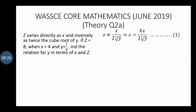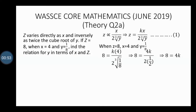From the question, when z equals 8, x equals 4, and y equals 1/8. We substitute these values into equation 1, giving us 8 equals k multiplied by 4 over 2 multiplied by the cube root of 1/8. The cube root of 1/8 gives us 1/2, and the 2s cancel out, which gives us 8 equals 4k.